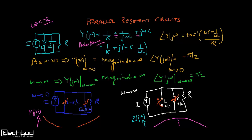The admittance is the addition: 1/R + 1/jωL + jωC. In phasor terms, the phase is the imaginary component divided by the real component — that is tan⁻¹ of (ωC − 1/ωL) divided by (1/R).